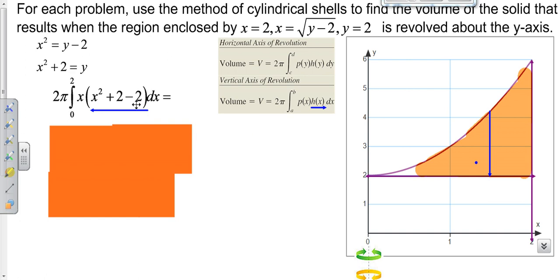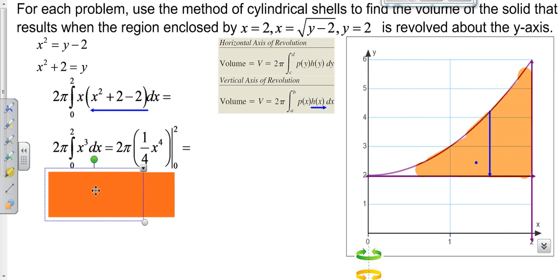And so that is our height of our shell. In this case, the 2s drop, and we have x squared here. With our x in front, which is x cubed. Then we can integrate that. We plug in our 2 minus what we get when we plug in 0, and we get an answer of 8 pi.